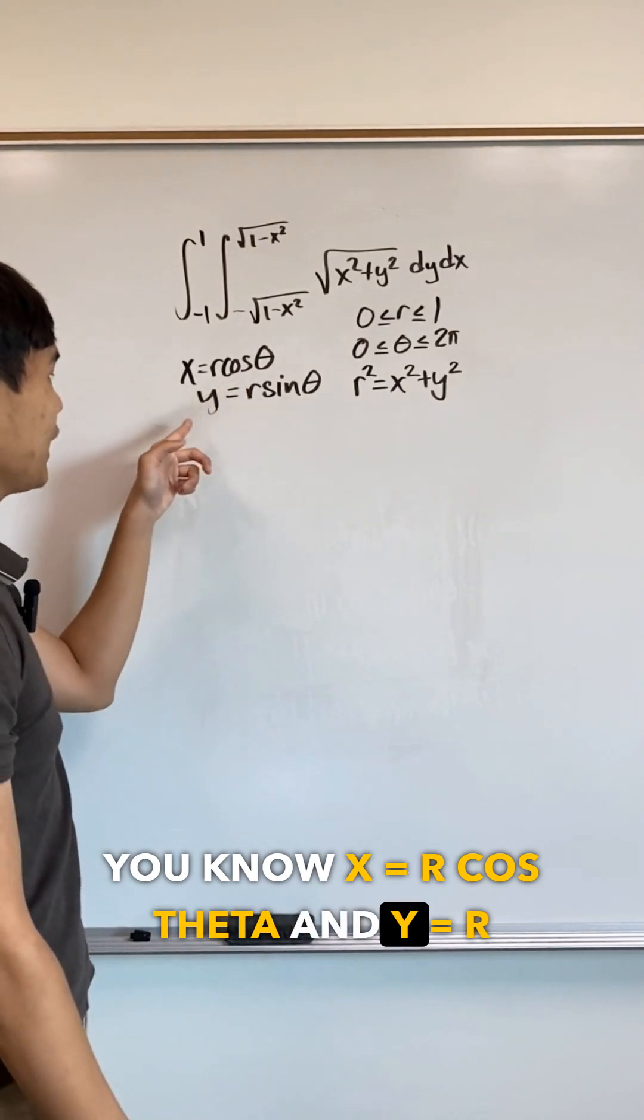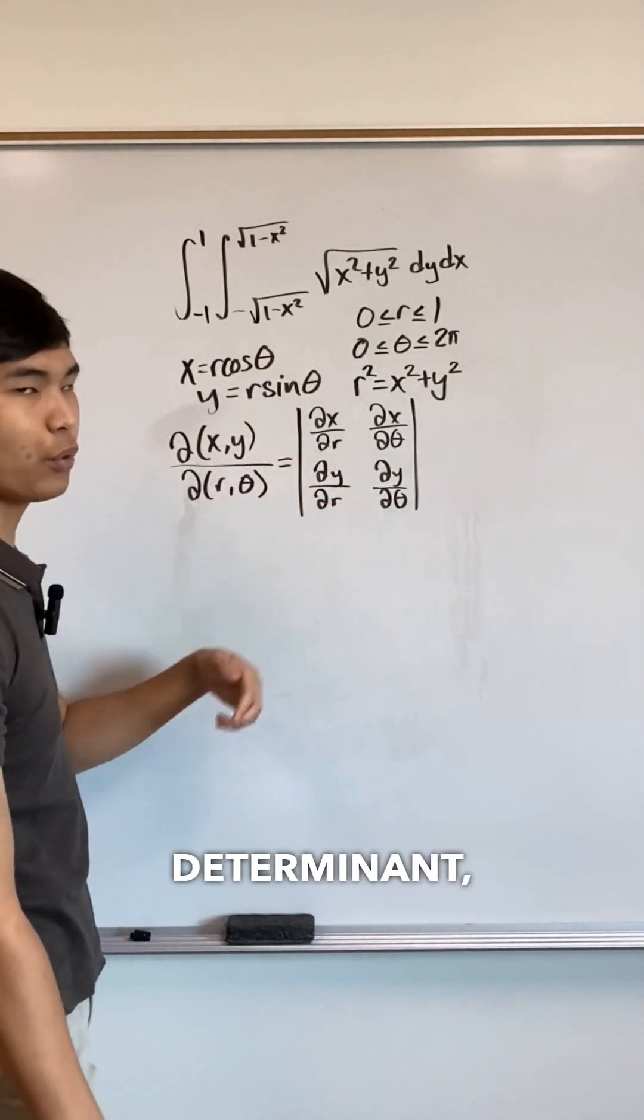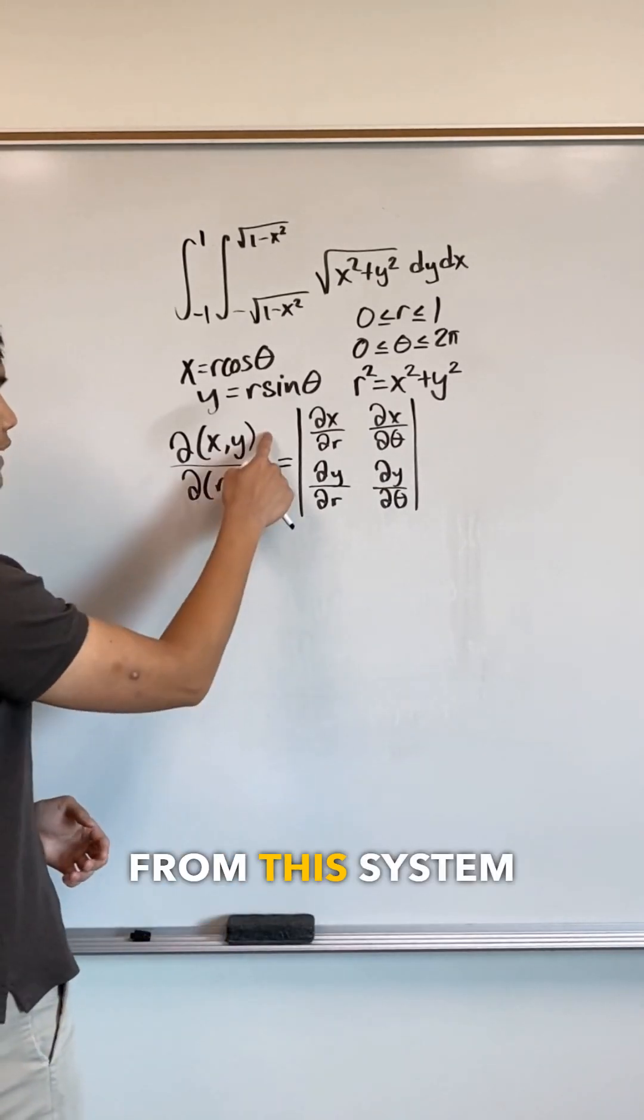We know x equals r cos theta and y equals r sin theta. Using this information, we have to compute our Jacobian determinant, which is like a conversion factor for going from this system to this system.